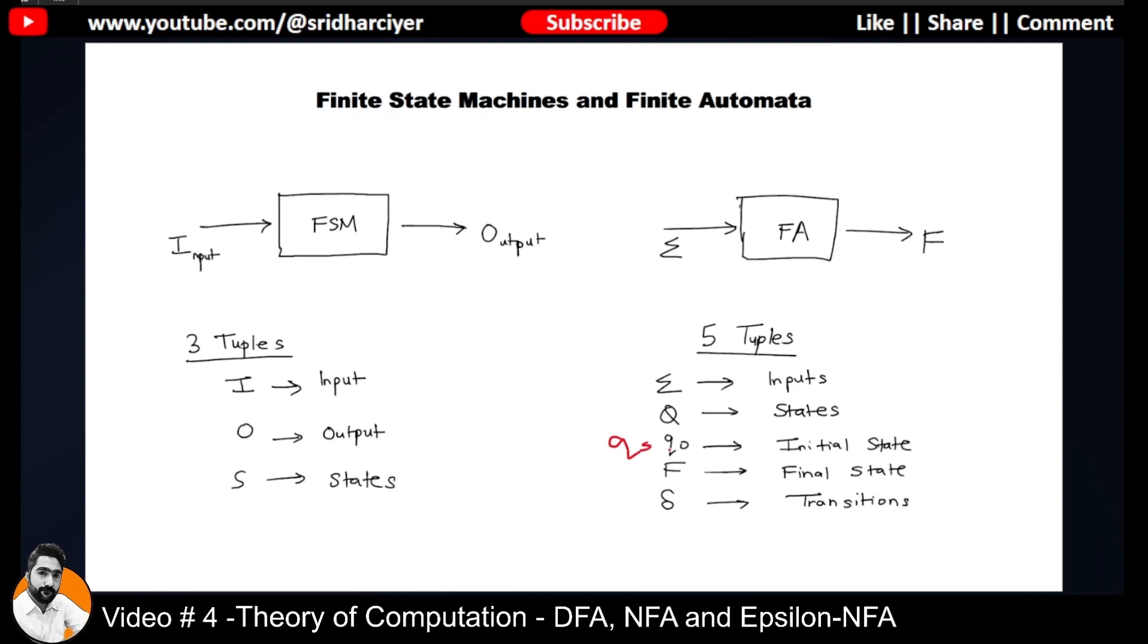So you can see that there are five tuples in the case of finite automata, which are nothing but inputs, the states, initial state, final state, and transitions which we have just now seen.